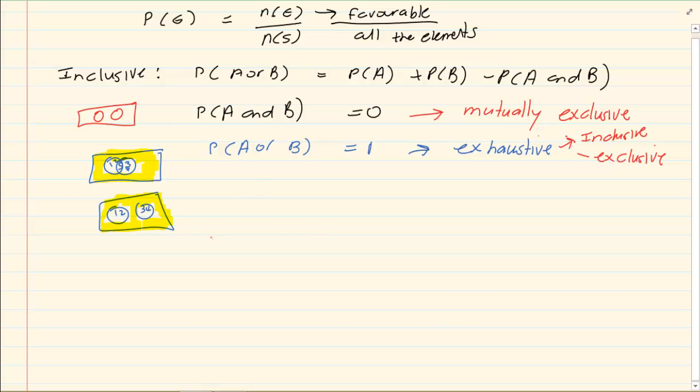Then you have an event where we have P of A plus P of B is equal to 1. This is the complementary event.